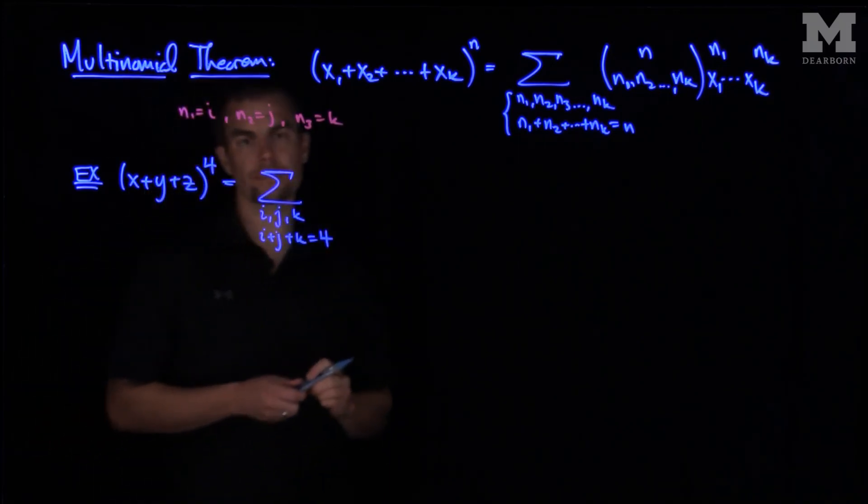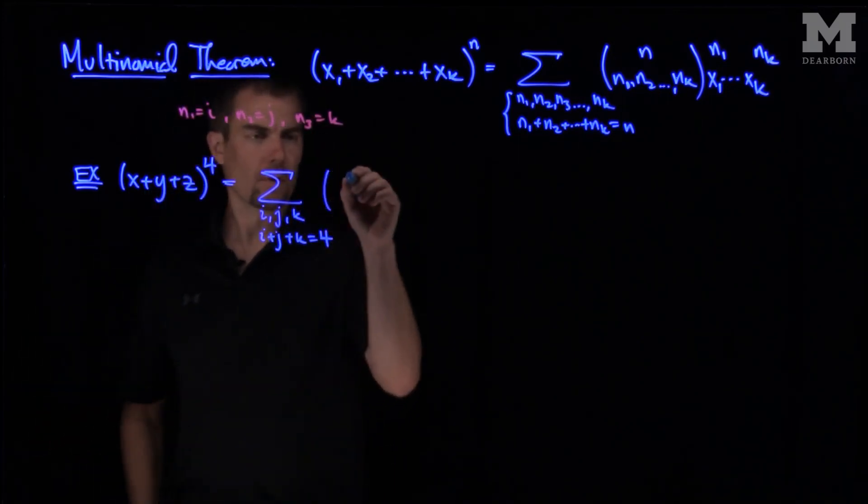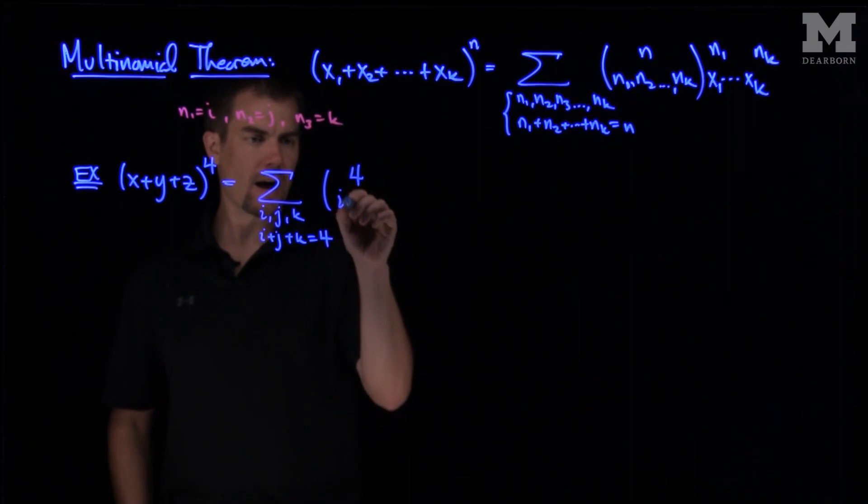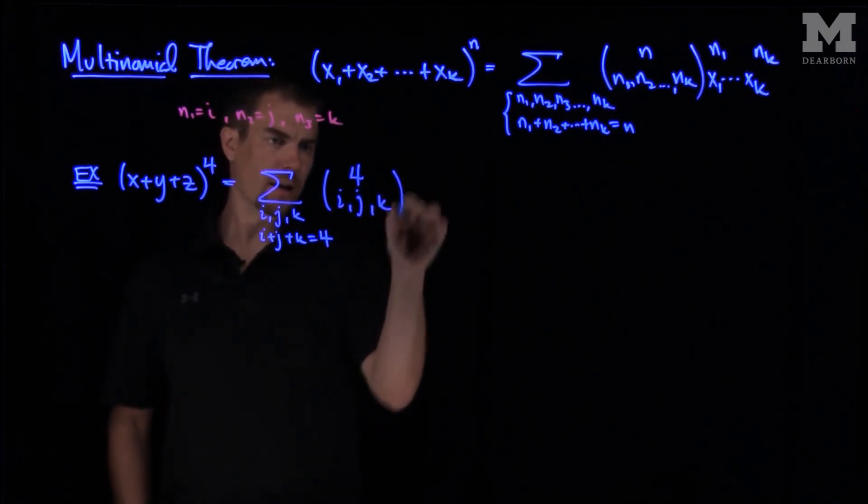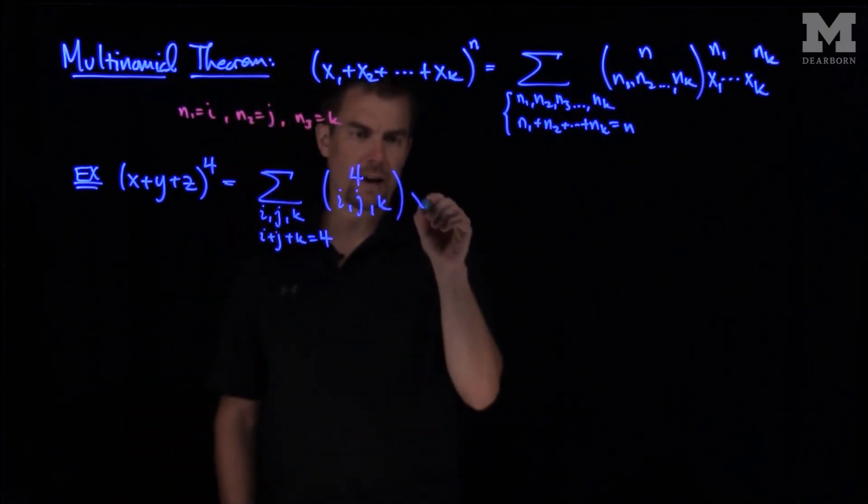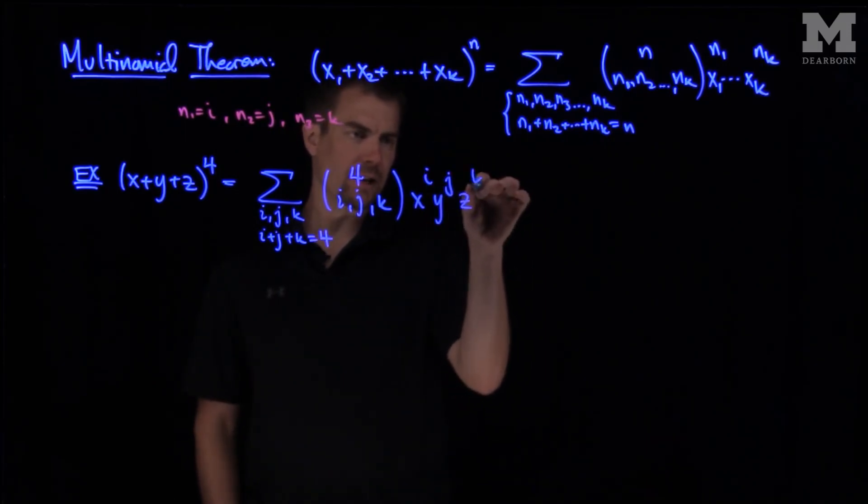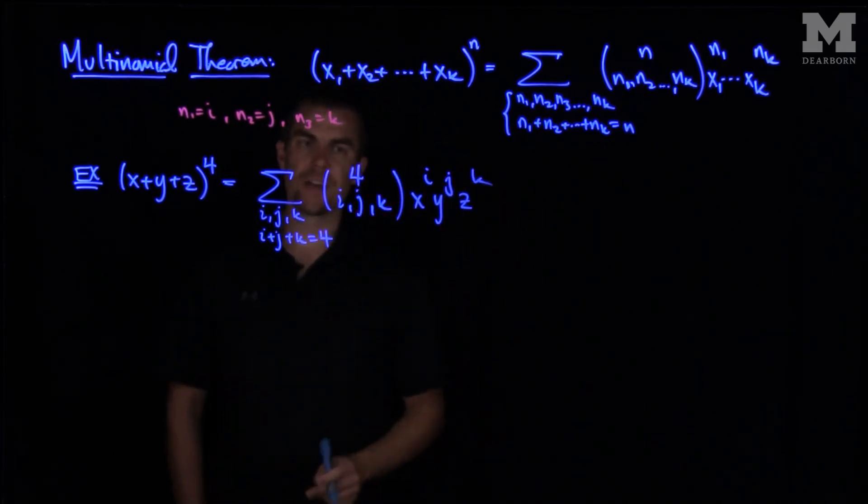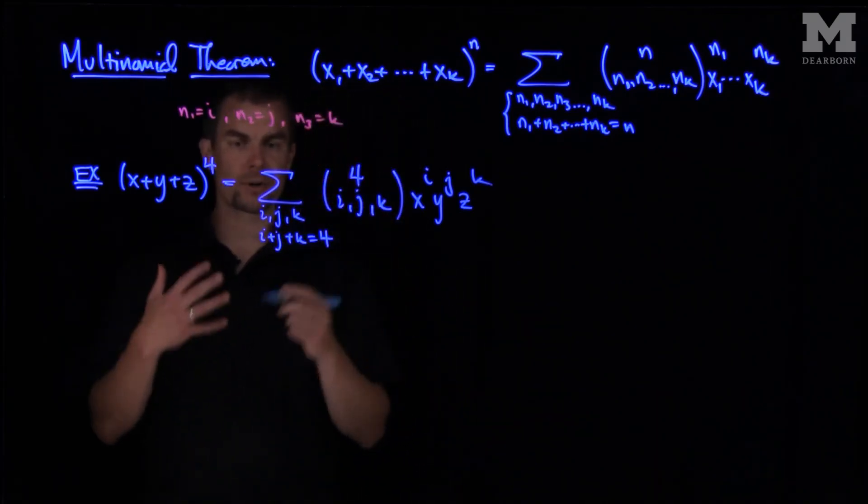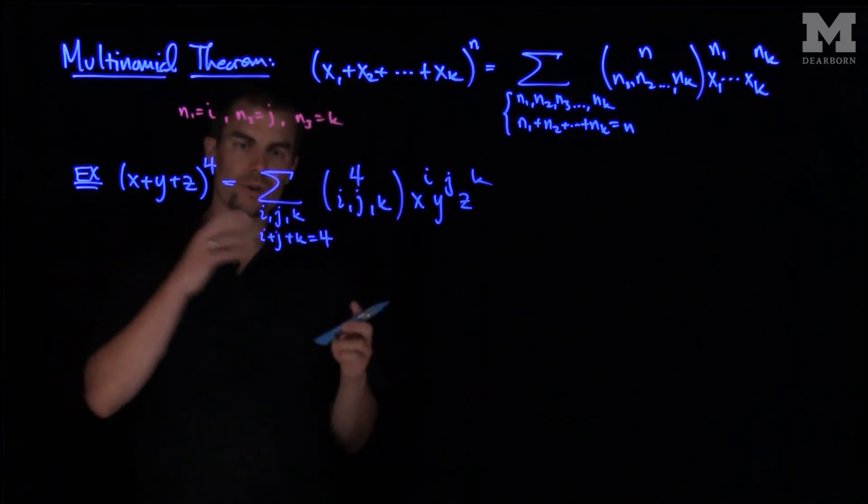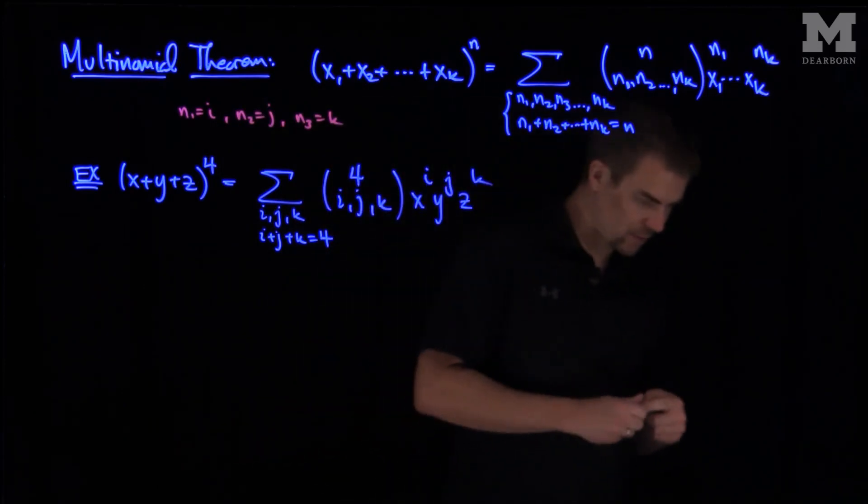And the requirement then becomes that i plus j plus k is equal to four. And then we'll have an x to the i, y to the j, and then z to the power of k. And this may look intimidating, but we can sort of write down term by term and figure out how we can arrange all these in such a way that they make sense to us.